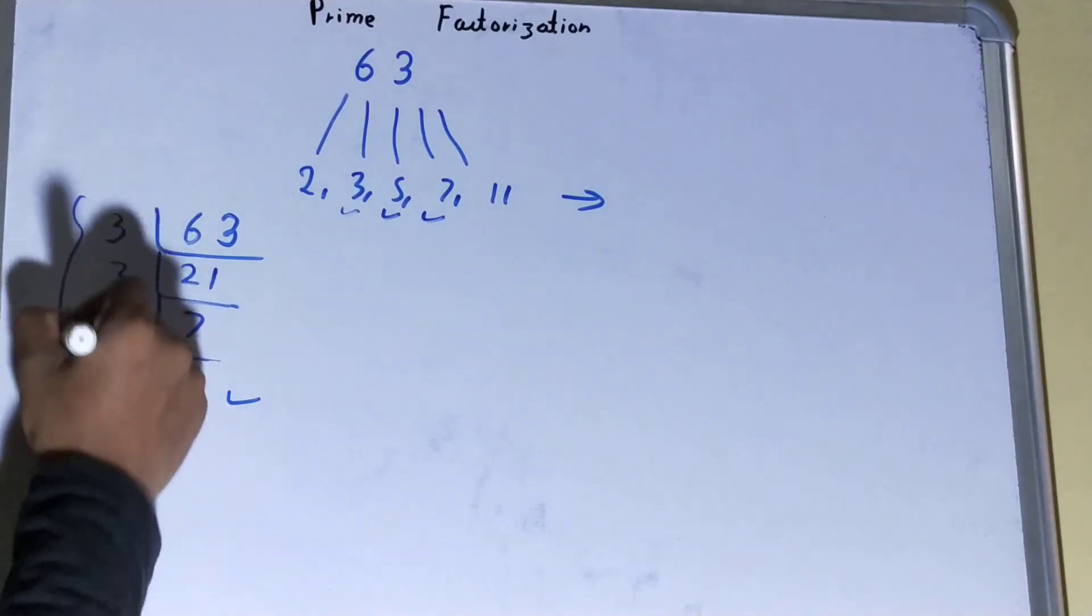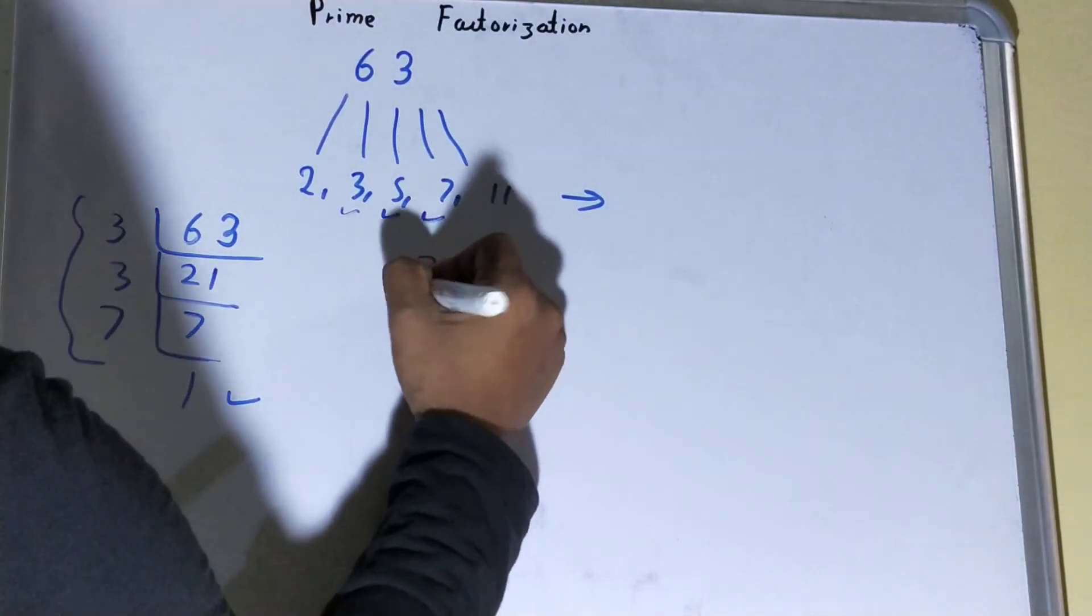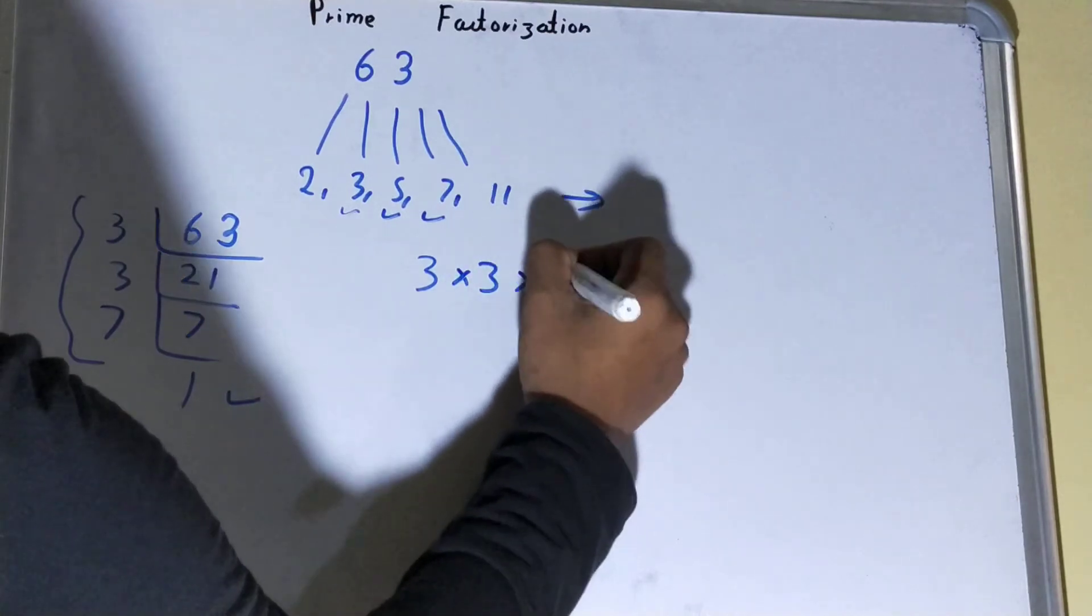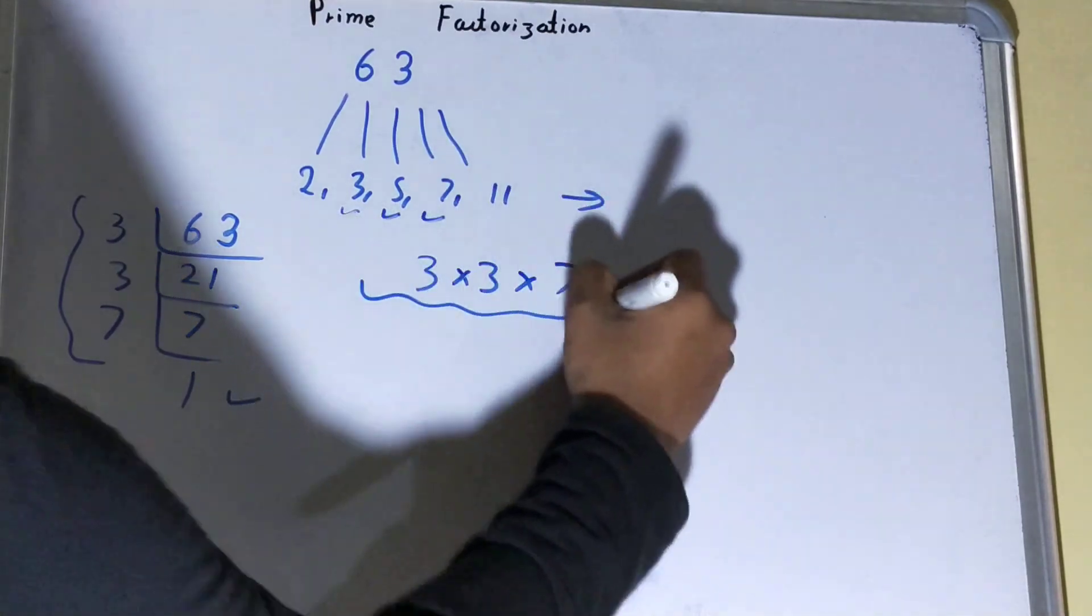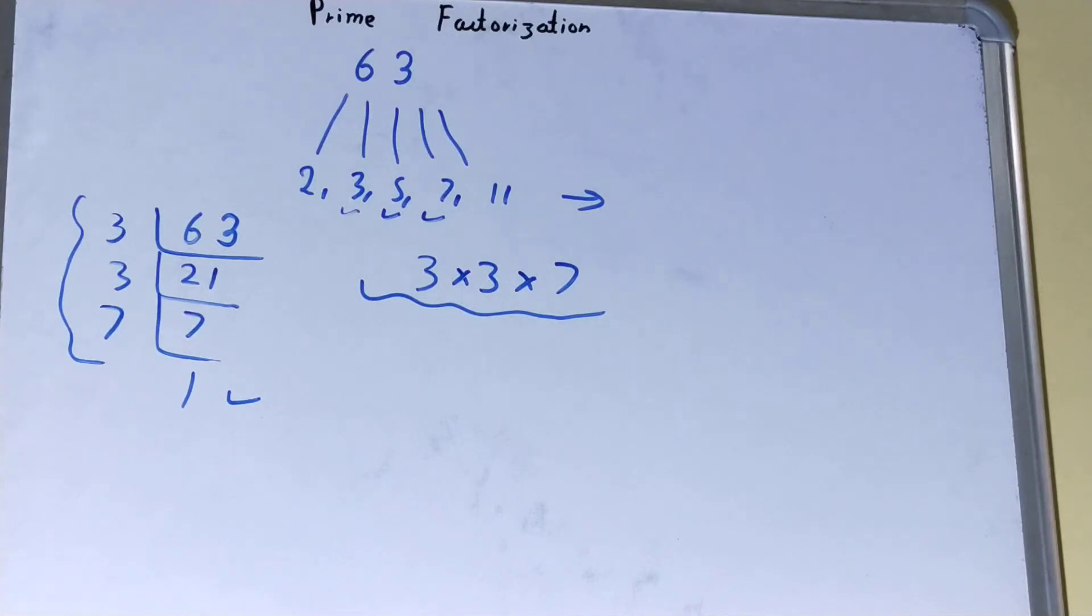Whatever you have on the left hand side will be your set of factors or set of prime factors for the number 63. Okay, that is 3 into 3 into 7. If you are not sure whether it is right or wrong, then you can multiply them.